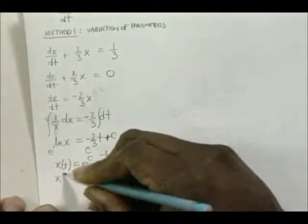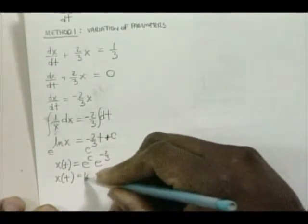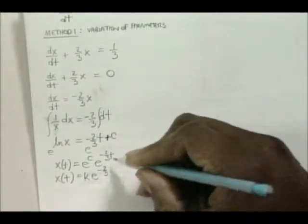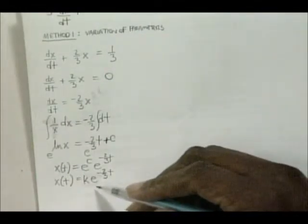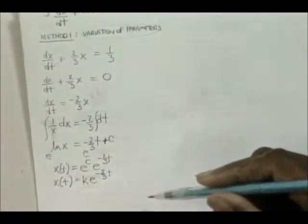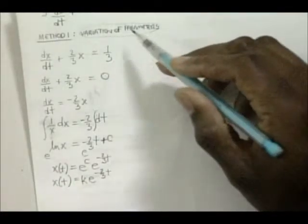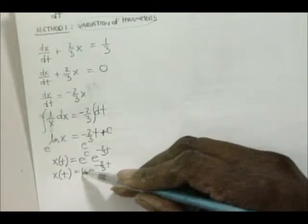This simplifies to x(t) equals k times e to the negative 2/3 t, where we call that constant k. As of right now, this represents almost the solution we're looking for. This technique is called variation of parameters — what has been researched is that one technique for solving this kind of equation is to vary this constant with respect to time.